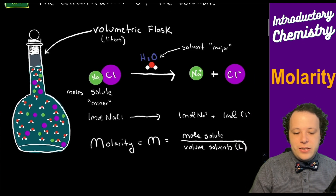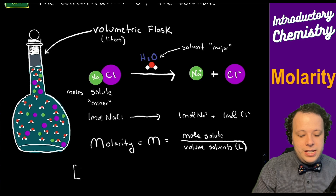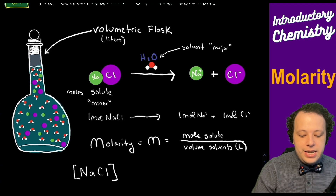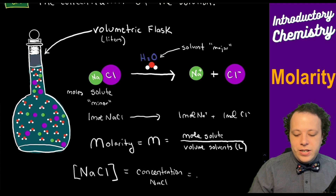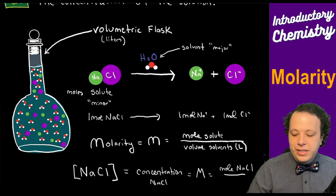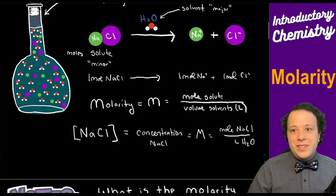Whenever we have this with sodium chloride, another very important nomenclature is square brackets. So if we have a square bracket around NaCl, this is referring to the concentration of NaCl, also known as the molarity. So that could be moles of NaCl for every liter of water — moles of NaCl as solute over liters of water as our solvent.